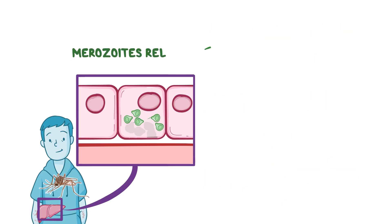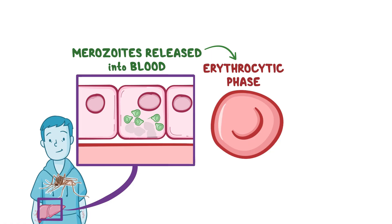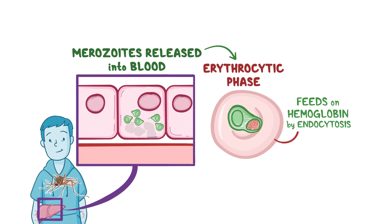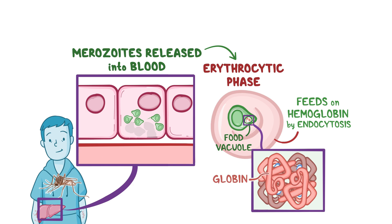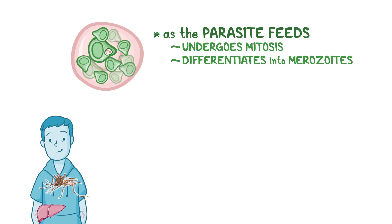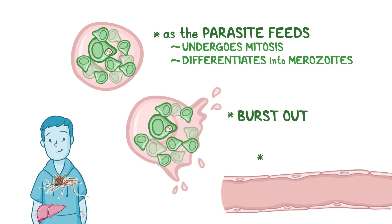In both cases, when the merozoites are released into the blood, they enter the erythrocytic phase, where they invade red blood cells. Once inside the red blood cell, plasmodium feeds on hemoglobin via a process called endocytosis, where the parasite wraps its membrane around the hemoglobin in order to bring it inside itself. The plasma membrane forms a bubble called a food vacuole, where hemoglobin can be broken down. Plasmodium uses the globin proteins to fuel their growth, but the heme is toxic to them, so they're converted into insoluble hemozoin crystals. As the parasite feeds, it undergoes mitosis and differentiates into lots of merozoites, which then burst out of the red blood cell and enter back into the circulation.